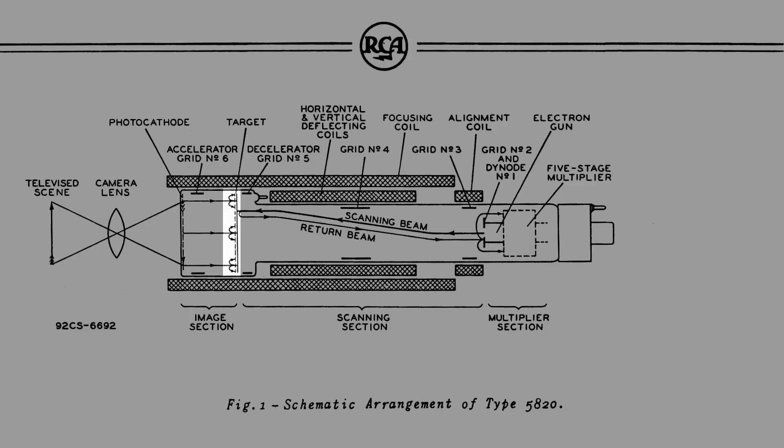Therefore, the potential of the glass disk is limited for all values of light and stable operation is achieved. Emission of the secondaries leaves on the photocathode side of the glass a pattern of positive charges which corresponds with the pattern of light from the scene being televised.